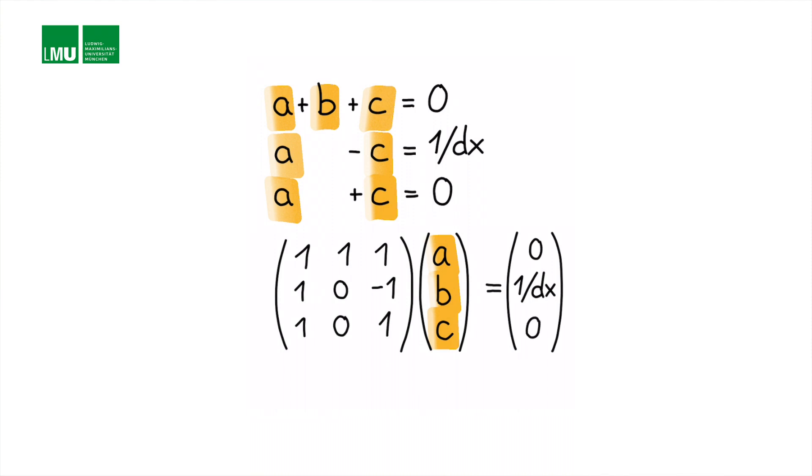And this is now written in matrix vector form as you see here with a system matrix A, the unknown coefficients a, b, c that we use the letter w for weights and on the right hand side basically the desired solution in that case it's 0, 1 over dx and 0.